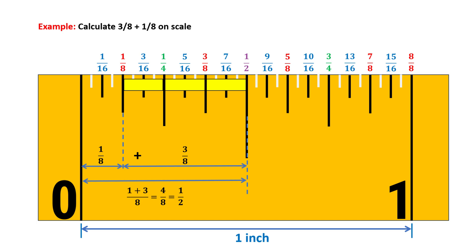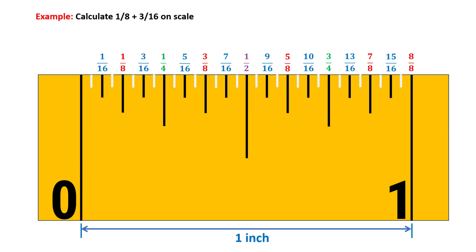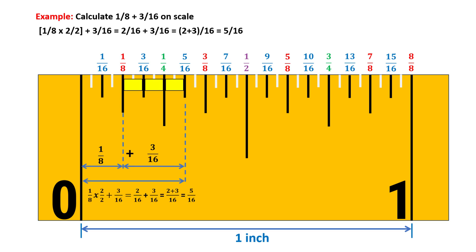When the fractions have different denominators, you can convert them to a common denominator first. For example, to add 1/8 and 3/16, multiply 1/8 by 2/2 to get 2/16. Then add 2/16 and 3/16 to get 5/16.